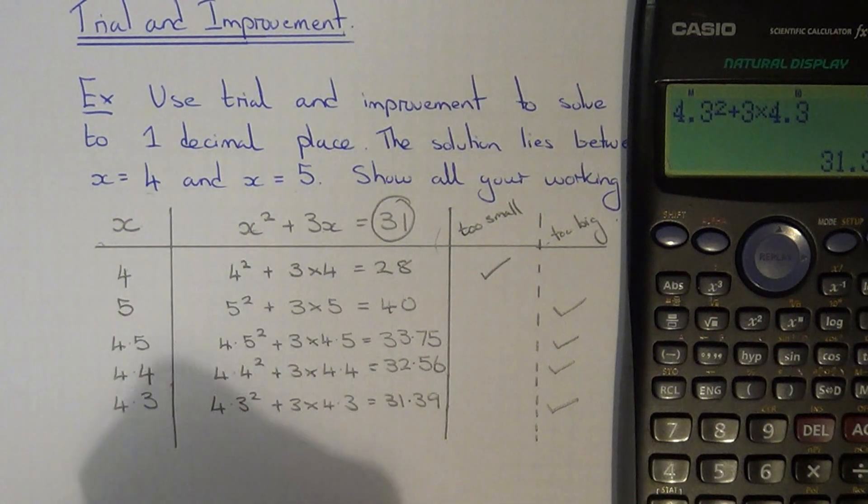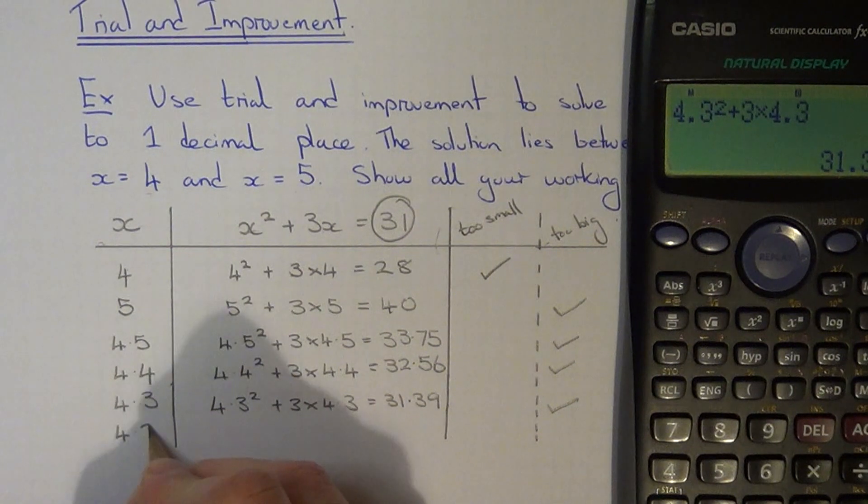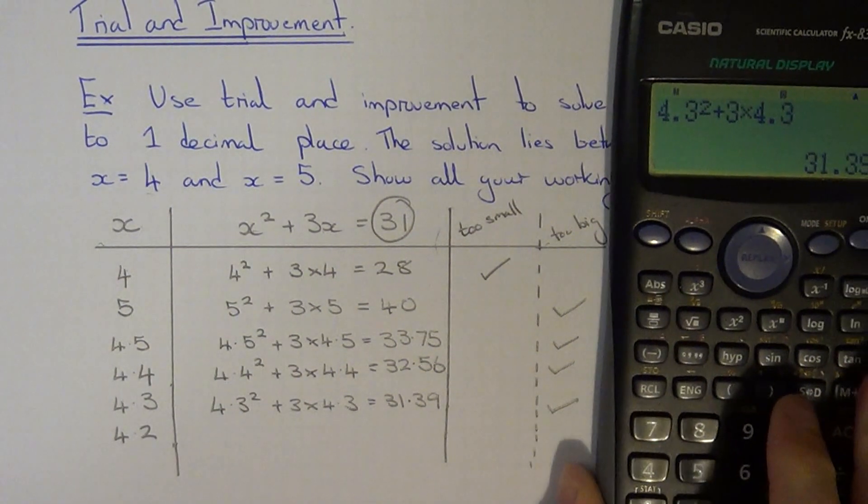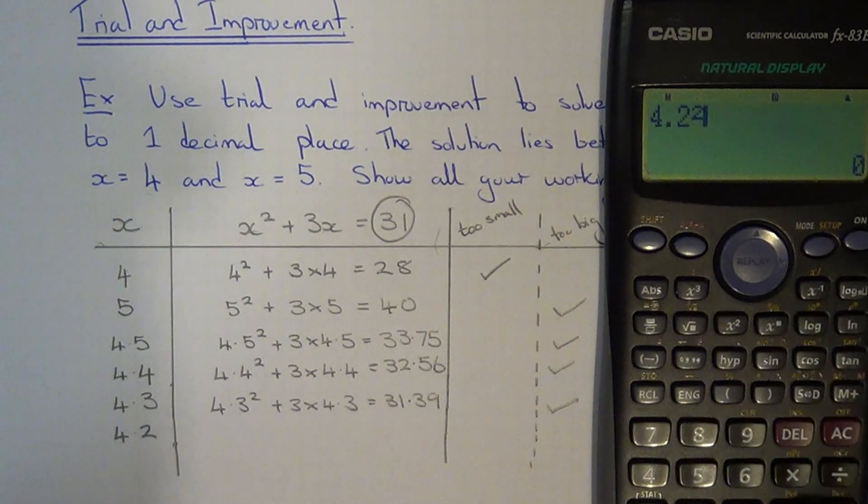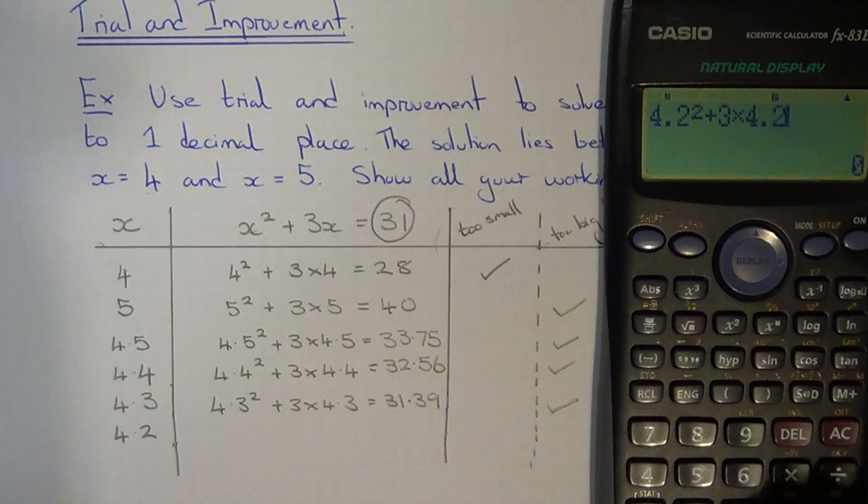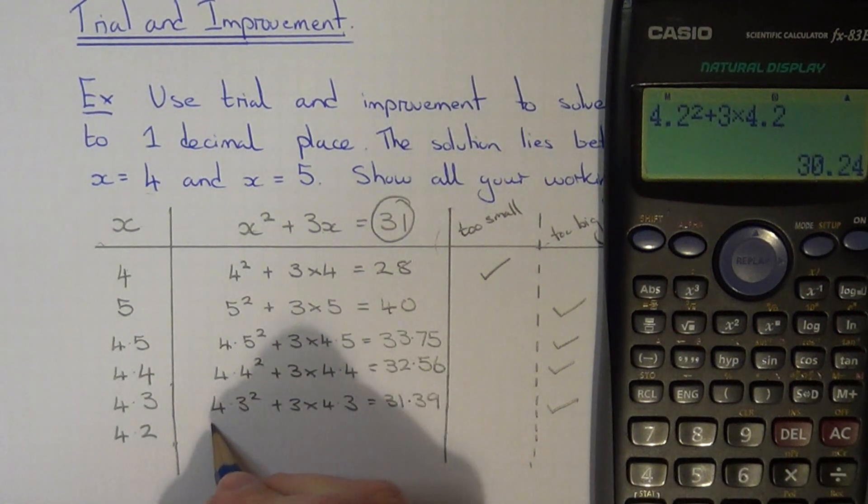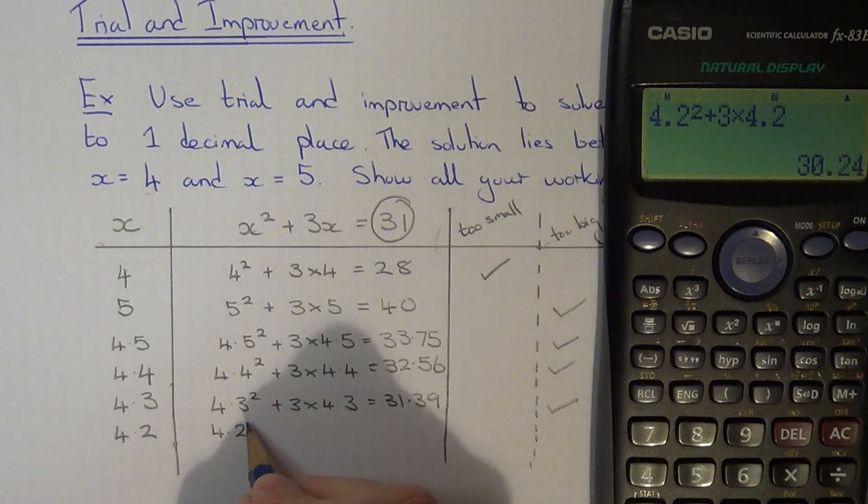So let's drop it down by 0.1 again and do 4.2. So 4.2 squared plus 3 times 4.2, that gives 30.24.